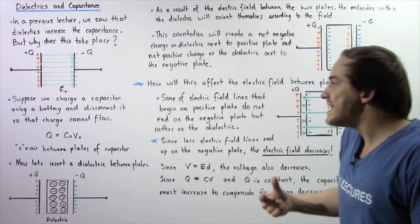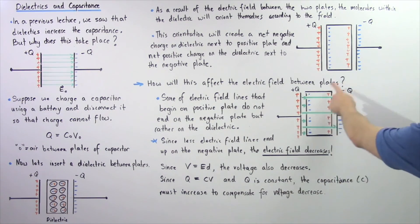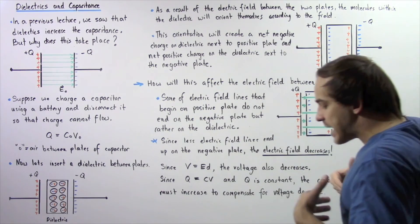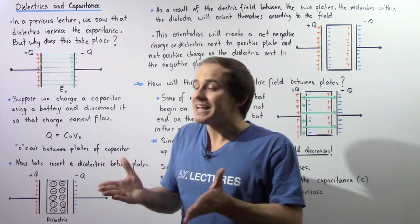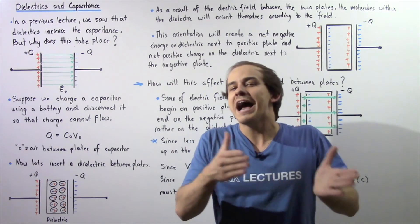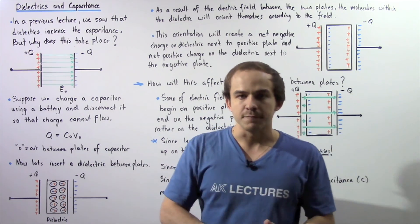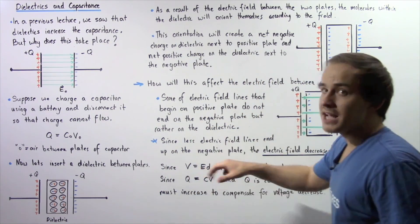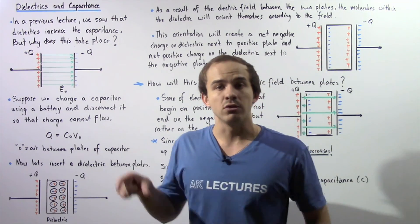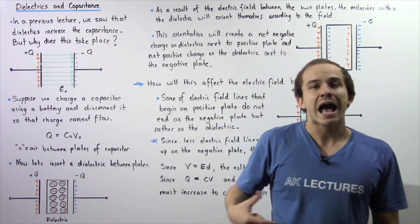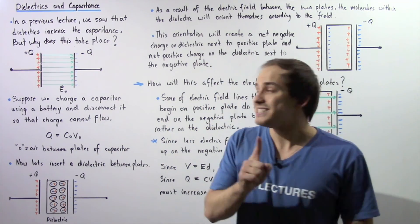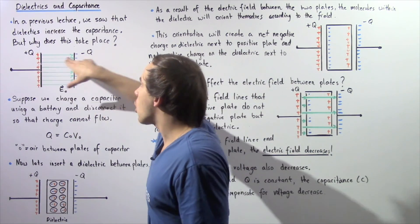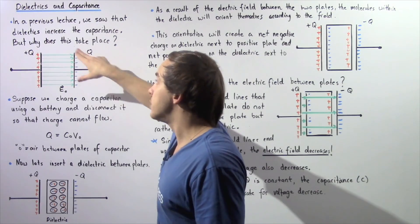So we have a net fewer electric field lines ending up on that side, which basically means because we have fewer electric field lines, we have a smaller electric field. Now, because the voltage is equal to E times D, if we decrease our electric field, we decrease our voltage. And since we disconnected our battery, our charge cannot leave these plates.